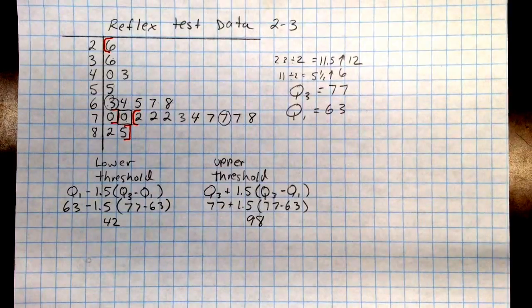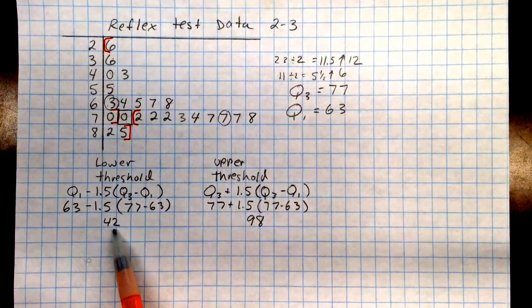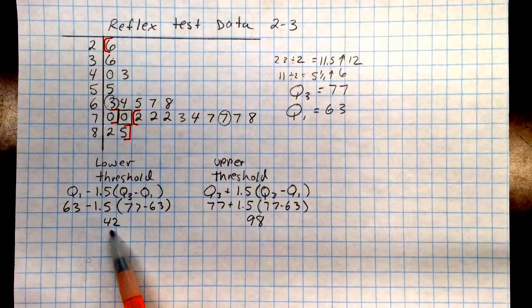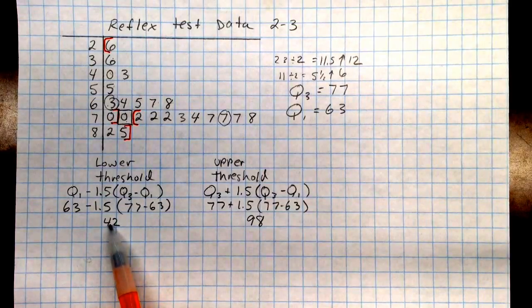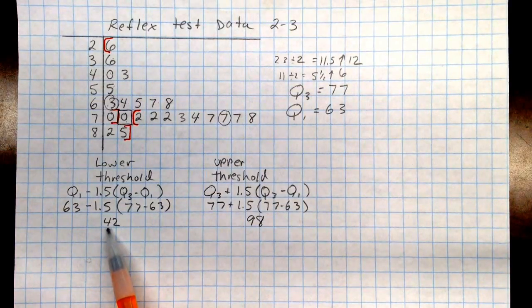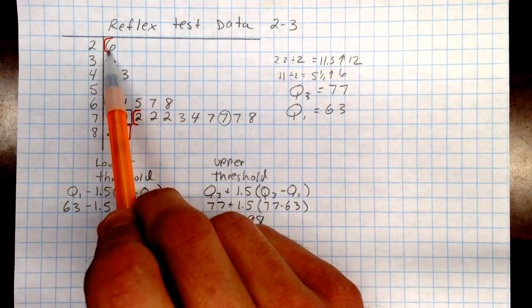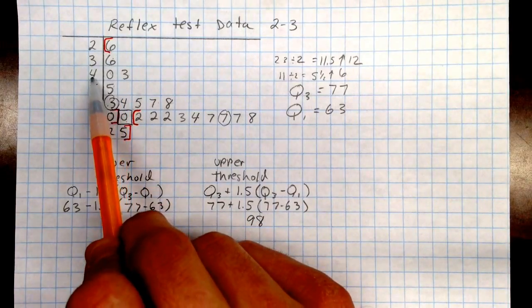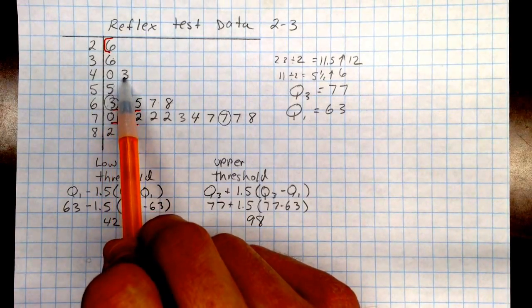Again, how to read these thresholds and understand these. If we look at the lower threshold of 42, what that number is telling us is if a number goes lower than 42, it is considered an outlier. In our data set, we have several numbers less than that. 26 is lower, 36 is lower, and 40 is lower. 43 is now it's higher.